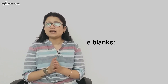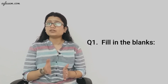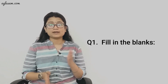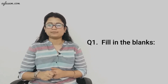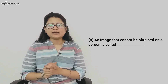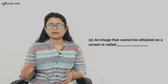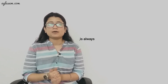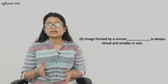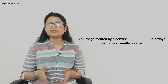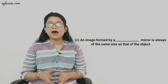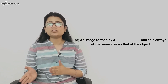Question 1 is a fill-in-the-blank exercise. Part (a): An image that cannot be obtained on a screen is called a virtual image. Part (b): The image formed by a convex mirror is always virtual and smaller in size — the answer is 'mirror'.